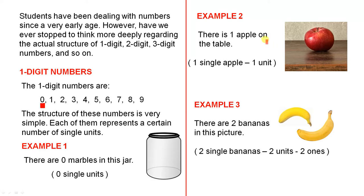Example two. There is one apple on the table. There it is. Just one apple. One single apple equals one unit. That's what this means.